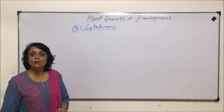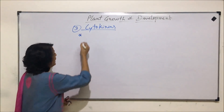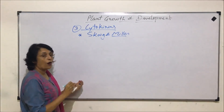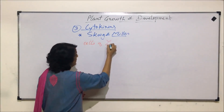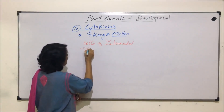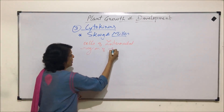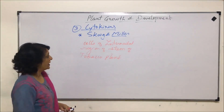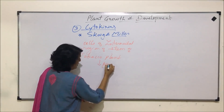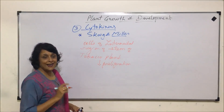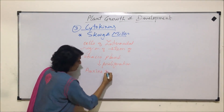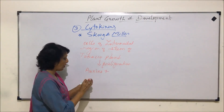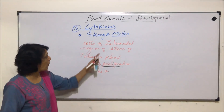The discovery of cytokinins started with the observation made by Skoog and Miller. Skoog and Miller observed that cells of the internodal region of the stem of the tobacco plant showed proliferation — that means they divided — only if auxins were accompanied with some other substances. That means when something else was added with auxin, then only this proliferation or cell division was seen in the cells of the stem.